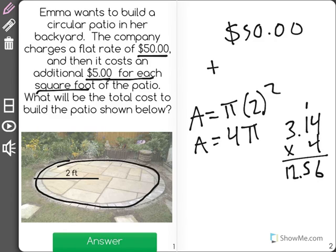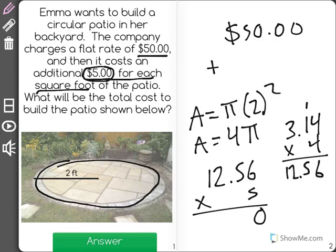Now we have to remember that it costs $5 per square foot. So if there's 12.56 square feet, we have to multiply that by 5 to find the total cost of making the patio. So this would give us a total of, oops, I'm sorry, $62.80.